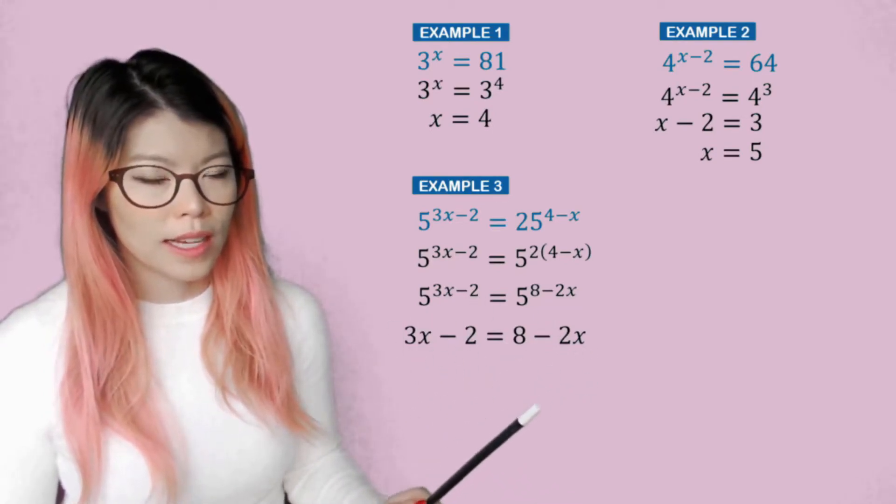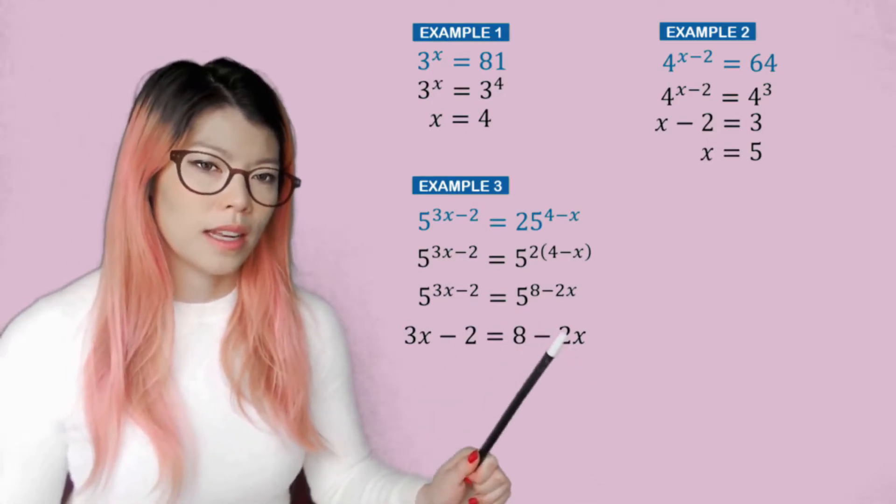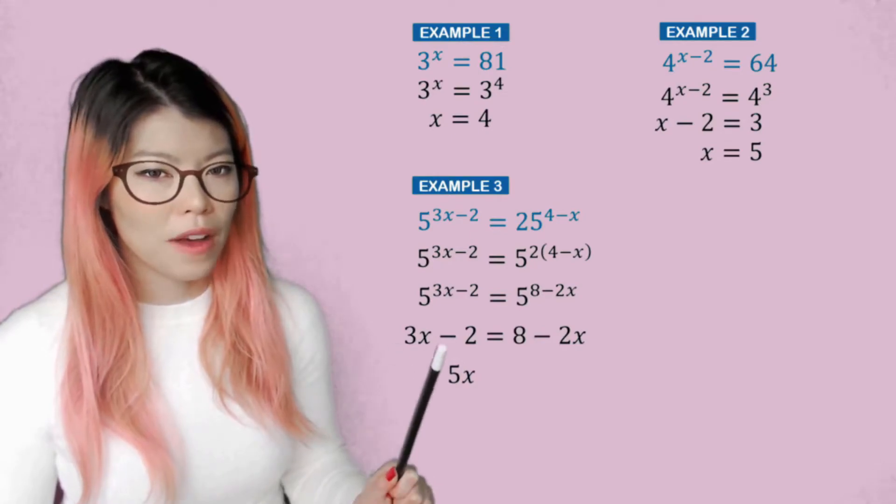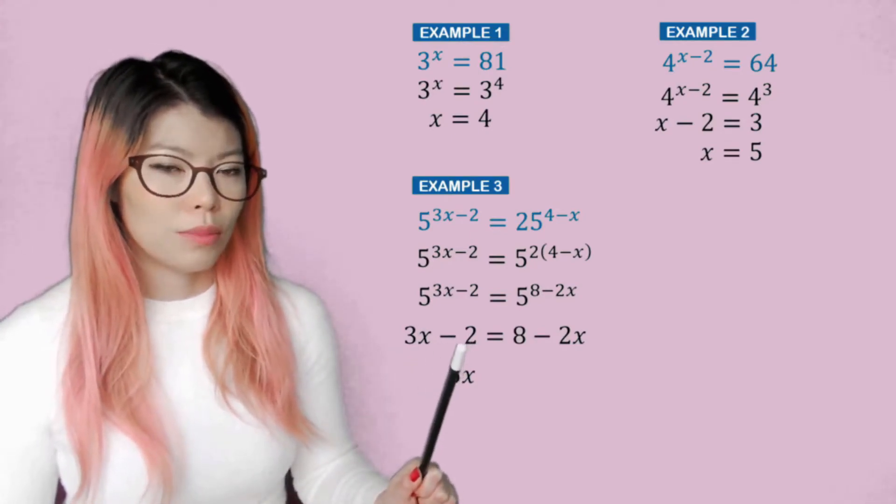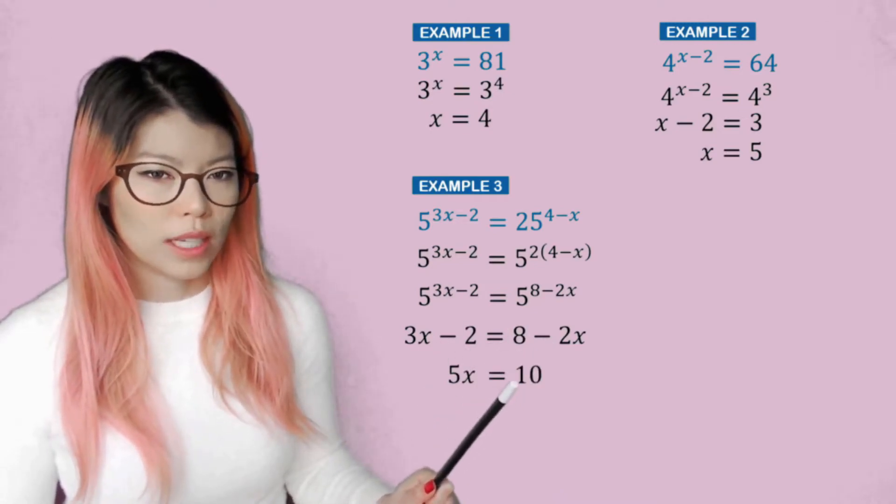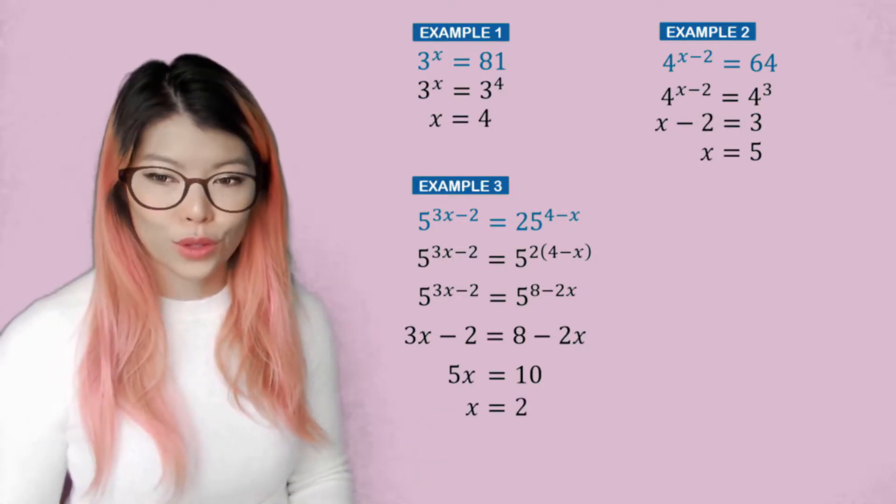When you have x on both sides, always get rid of the smaller side. So the smaller side is the negative 2x and we get rid of it by adding 2x to both sides. Now we have 5x on this side. Then bring the 2 to the other side by adding 2 to both sides, 8 plus 2 is 10. What do we do now? Divide by 5. So we have x equals 2.